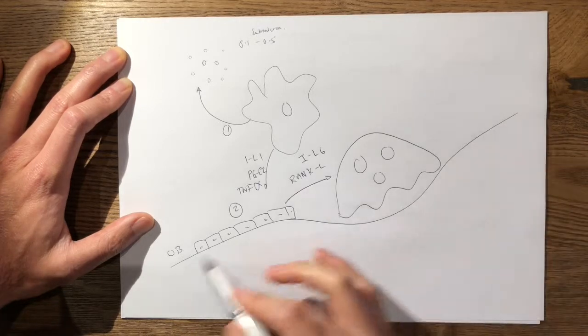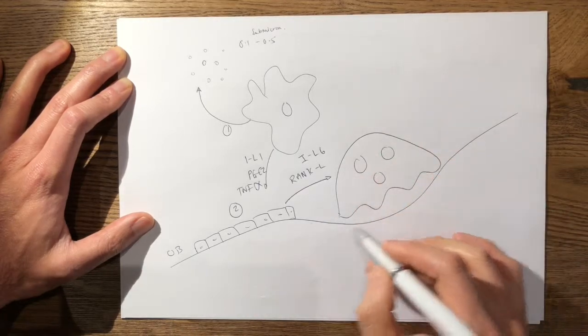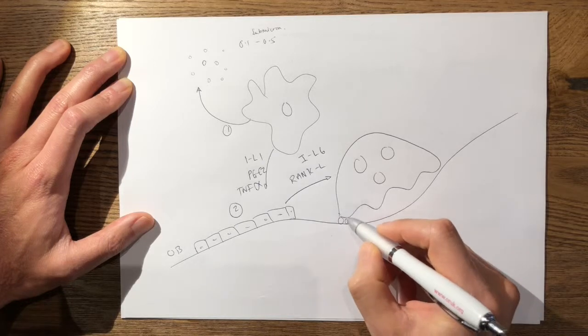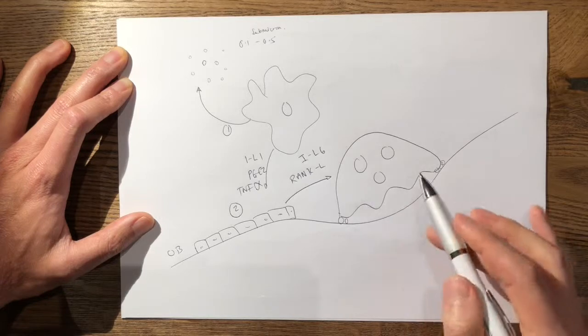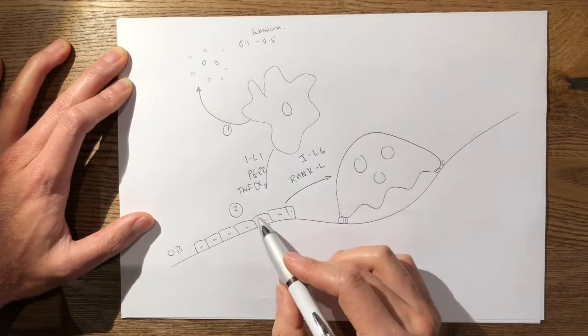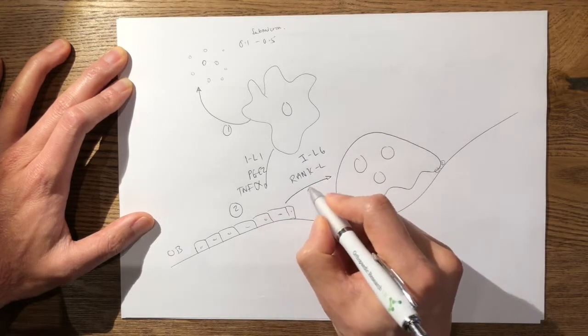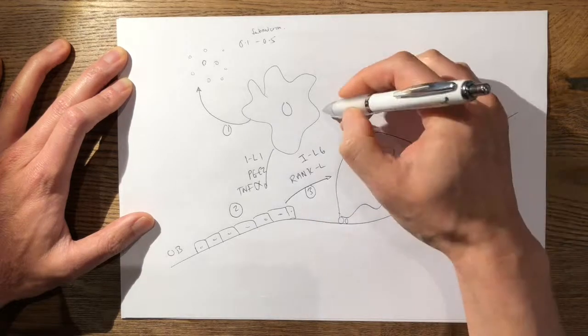As you know, this is your periosteal surface. This is your osteoclast in your Howship's lacunae with your integrins. If you look at the osteoclast video, you'll see how this works in resorption. This is your third step.